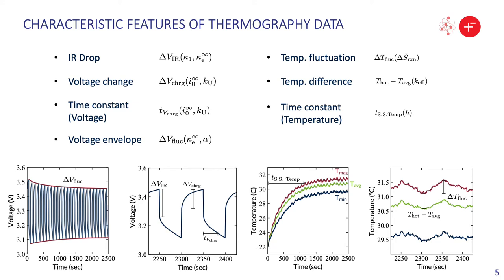We also want to match the temperature fluctuations that were caused by the periodic input signal, which gives us information on reaction entropy. And the separation between the max cell temperature and the average cell temperature tells us how well the battery materials can actually conduct heat.